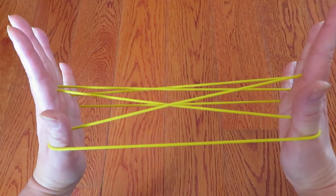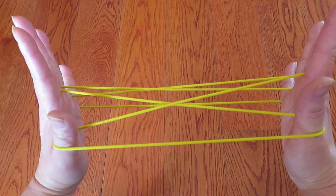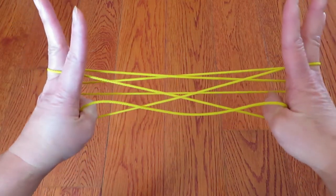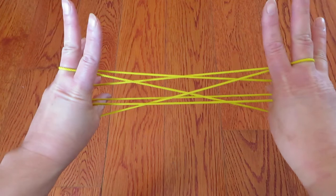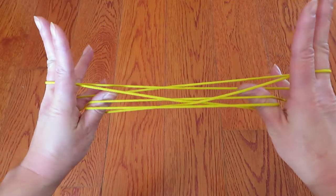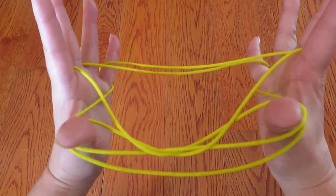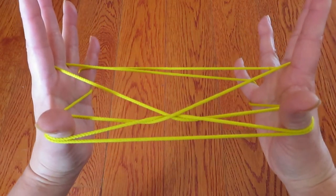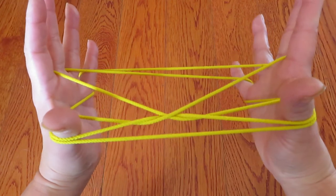Now if you see there is a horizontal string behind pinky, so with both thumbs go all the way to the back of the pinky and pick that horizontal string and bring it to the front toward you.